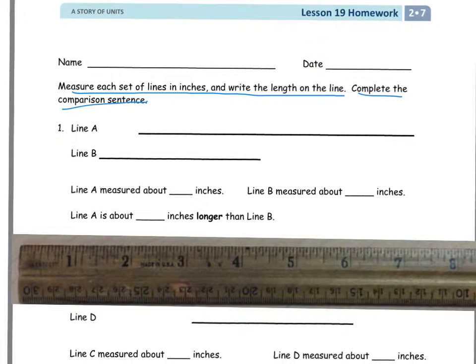For the first one, we have line A and line B that we need to measure. It says line A measured about blank inches, line B measured about blank inches, and line A is about blank inches longer than line B.